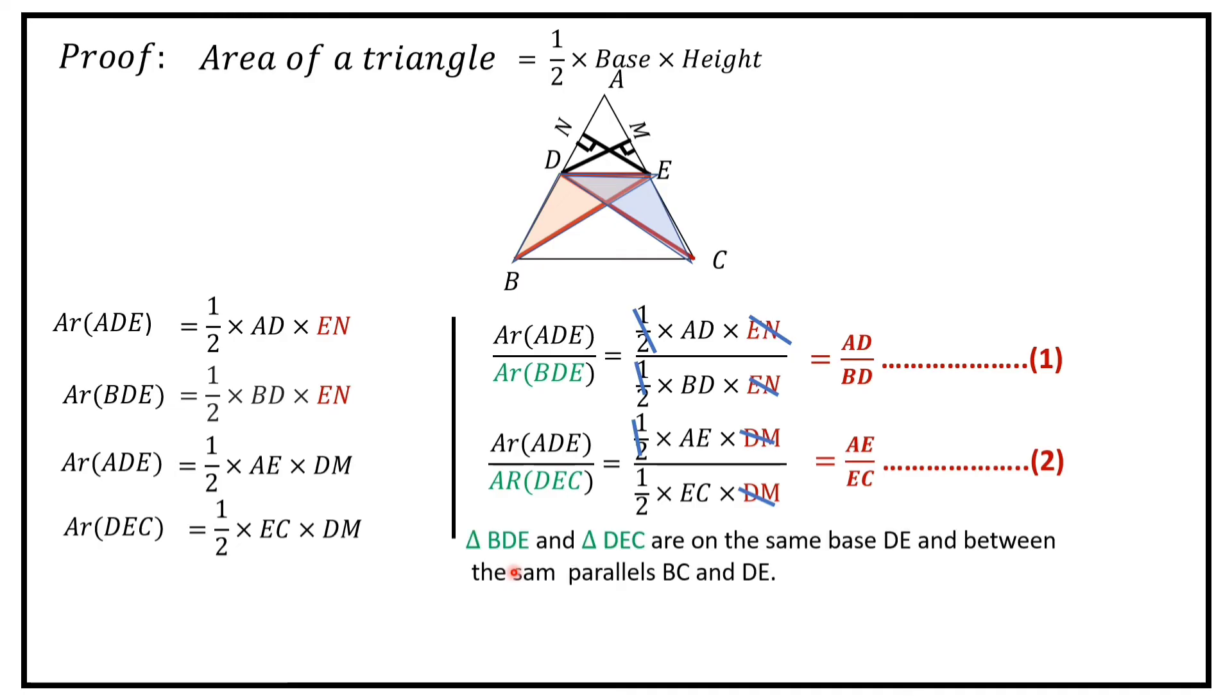Triangle BDE and triangle DEC are on the same base DE and between the same parallels BC and DE. Therefore, area of triangle BDE is equal to area of triangle DEC. Let this be equation number 3.